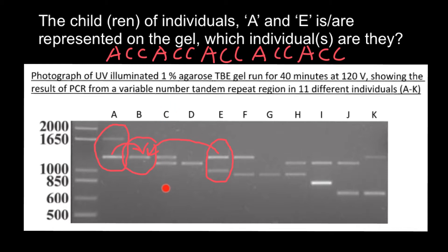Let's now analyze person C. Person C has one allele that can be inherited from parent A, and parent E also has an allele of the same size, so both parents can contribute that allele. However, who contributed this other size allele? Neither parent E nor parent A has this allele, so we can exclude this genotype.